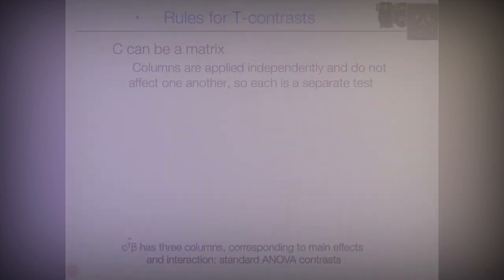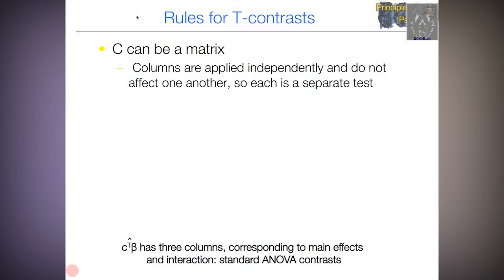Let's look at some rules for T contrasts now. And this can help us elaborate our understanding of contrasts. So first of all, C can be a matrix. It doesn't have to be one contrast value. It can be several. And if C is arranged in columns so that each column is a contrast vector, those columns are applied independently. So each is really a separate test of a separate effect on the data.